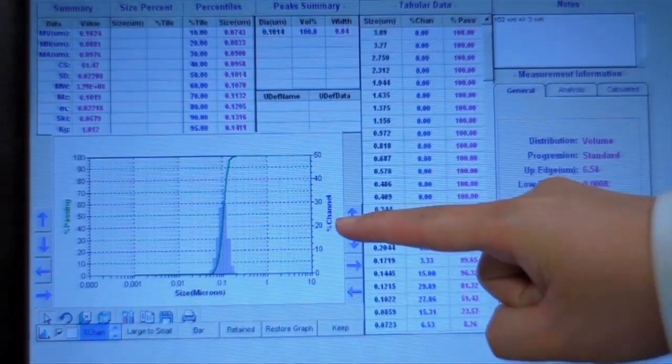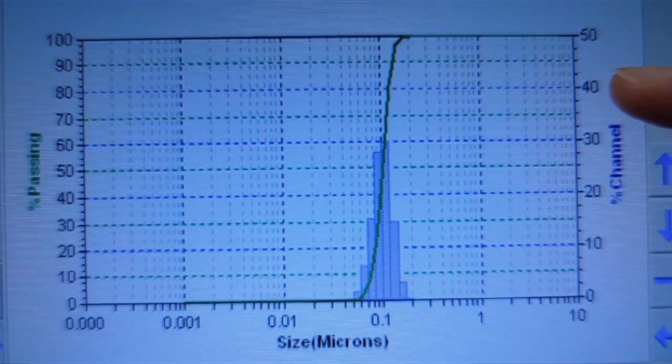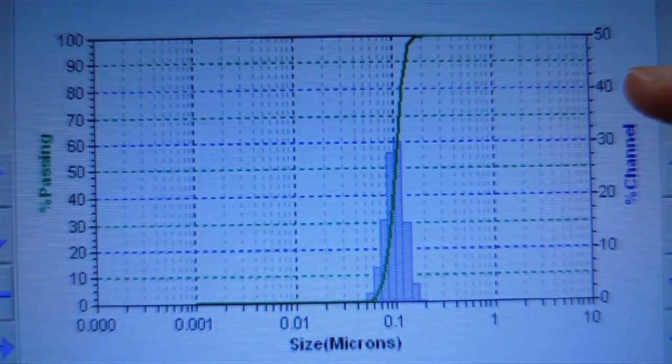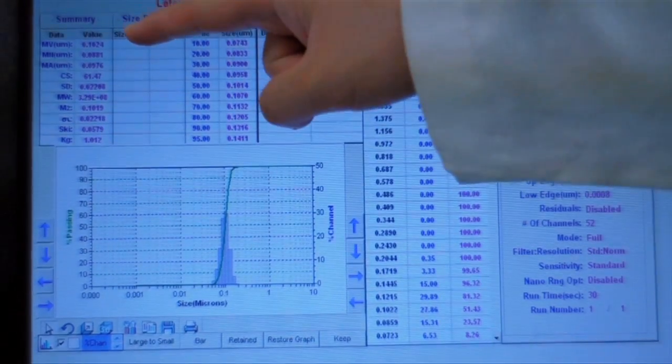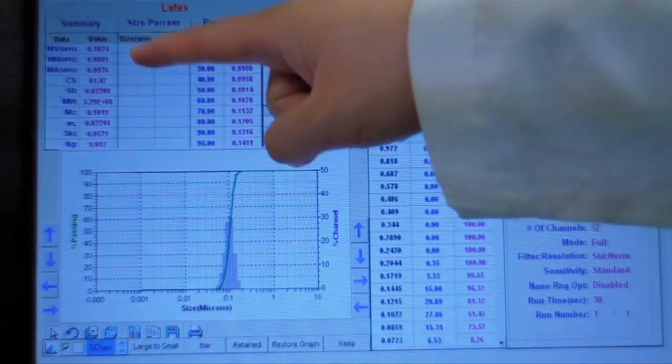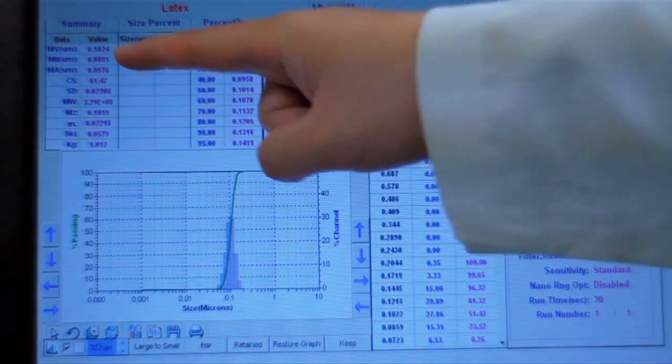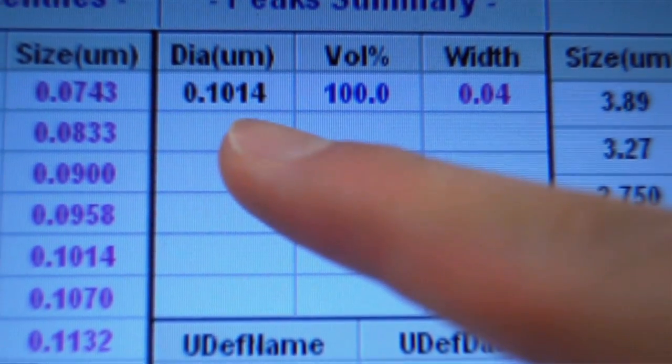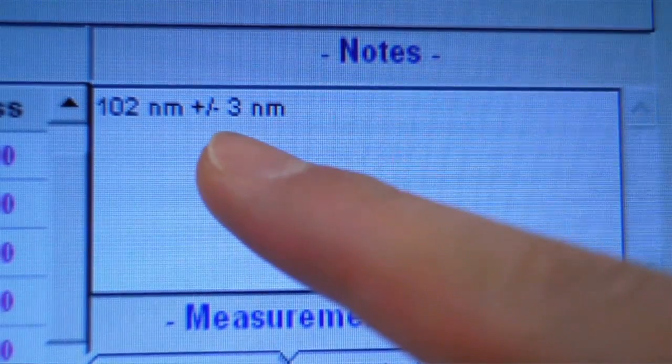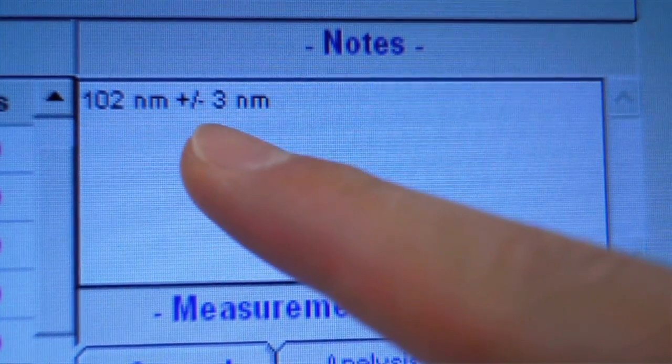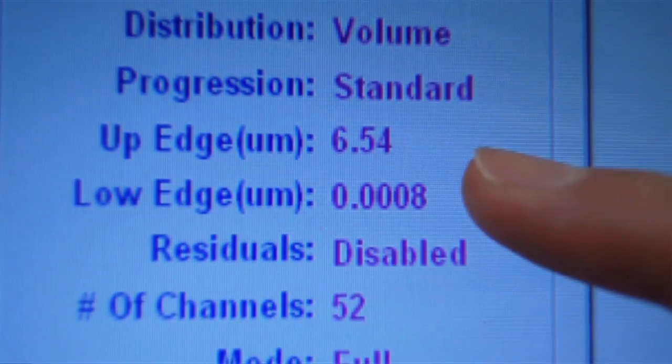Here is the data after the analysis. This is the size distribution curve, some statistical data on the samples, information on the peaks, some notes that we have added in, and the size range of the Nanotrack.